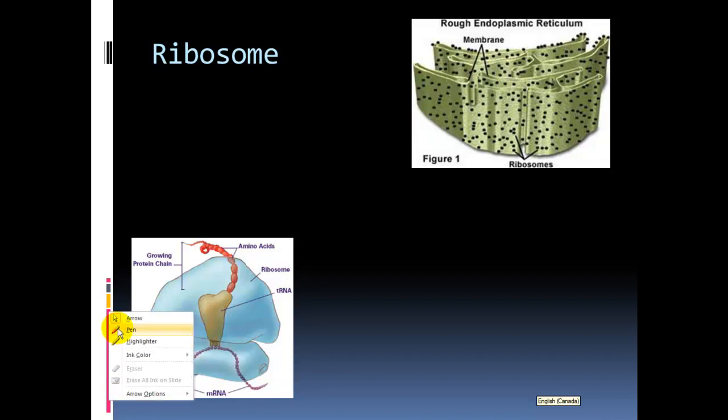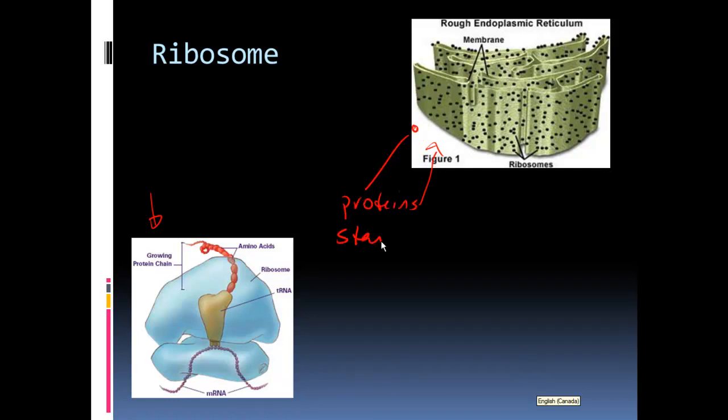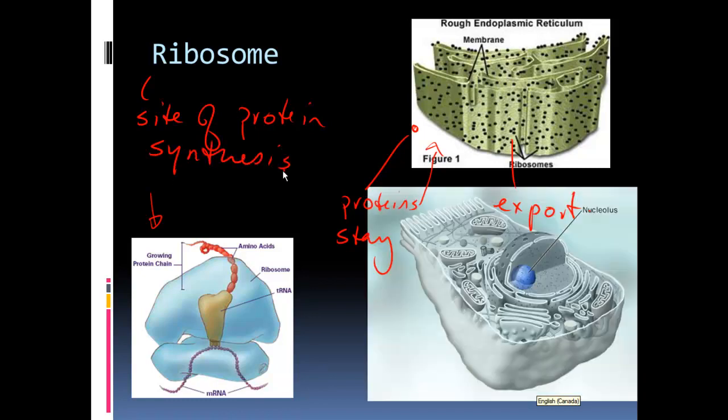The ribosome can be found in two places: either embedded in our ER, where it looks like pepper sitting on the ER, or free-floating. We'll see later that it's made of two subunits. This is where proteins are synthesized. Free-floating ribosomes are making proteins that stay in the cell, whereas embedded ribosomes are making proteins for export out of the cell. The overall function of ribosomes is protein synthesis - where proteins are made. In our memory, we want to tie the ribosome to the nucleolus because that is where our RNA is made, and that is what becomes ribosomes.